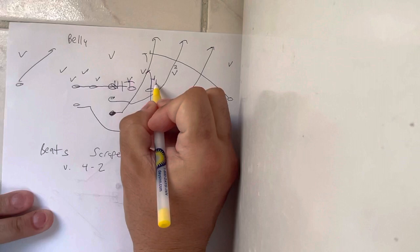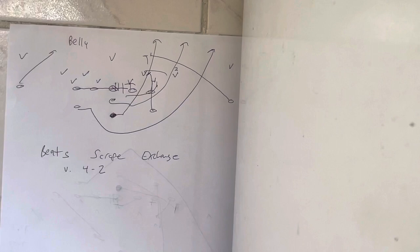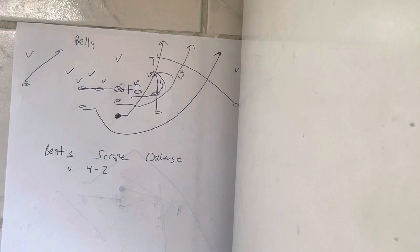Number one takes the dive, the backer runs over the top to take the quarterback or the pitch. Usually it's the quarterback, so maybe he comes that way, and then number two takes the pitch. That's the only reason you should ever run Belly.